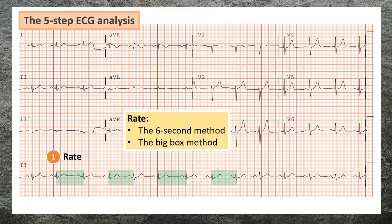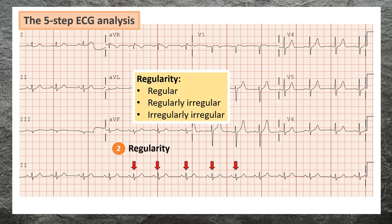Step one: determine the rate of the rhythm. Method one is the six-second method — count the number of R waves on the six-second strip and multiply by ten. Method two is the big box method — divide 300 by the number of big boxes between two consecutive R waves. The big box method is only used for regular rhythms.